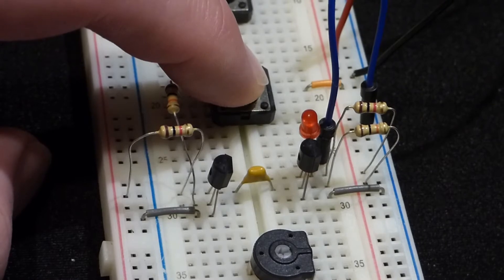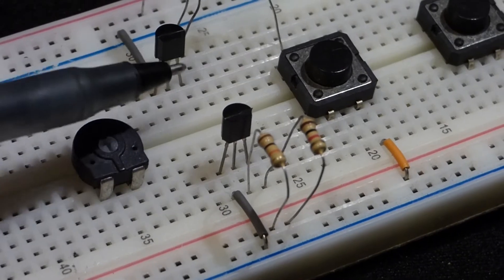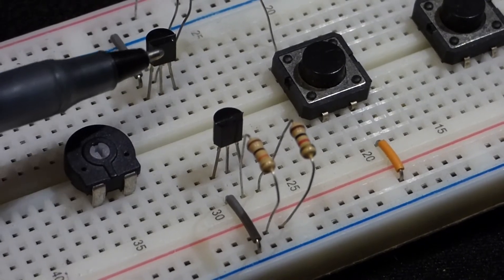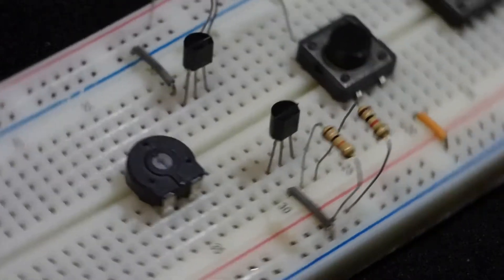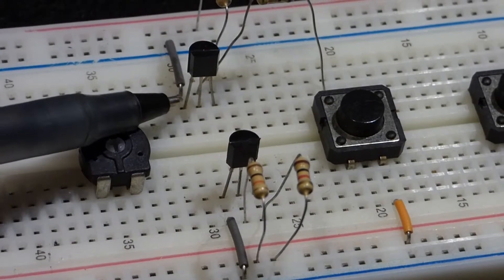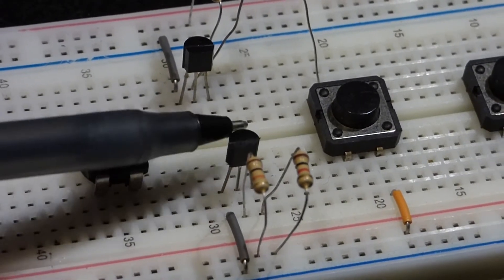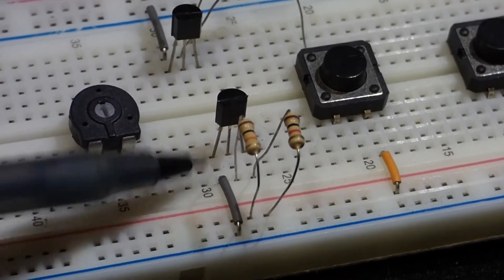Now wiring this together, we start with two NPN transistors. This is a 2N3904, and the flat side is facing the right, or if we turn it this way, it's facing us. So that makes this the emitter, the middle pin the base, and then the top pin up here the collector for both of them.